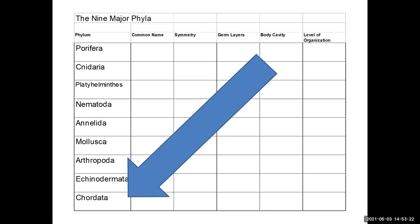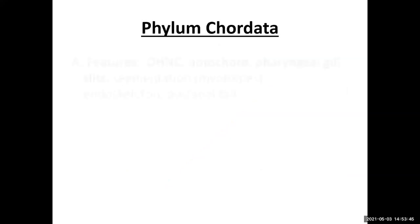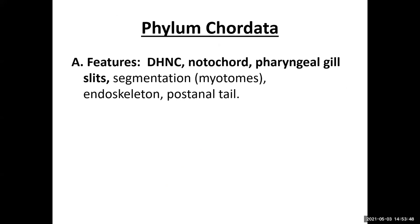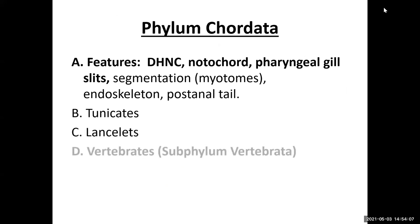Looking at the table, we can see we've gone through all of these phyla: porifera and cnidaria, the three worm phyla — platyhelminthes, nematoda, annelida — the soft-bodied mollusca, the jointed-legged arthropoda, and the spiny-skinned echinodermata. And now we're on the chordata. We're going to spend most of our time on vertebrates, but the chordata have these characteristics: a dorsal hollow nerve cord, a notochord, pharyngeal gill slits, segmentation, an endoskeleton, and a post-anal tail. We'll take a quick look at tunicates and lancelets and spend the rest of our time on vertebrates.